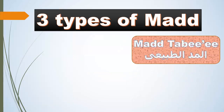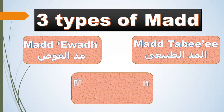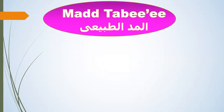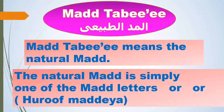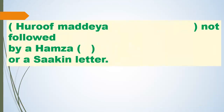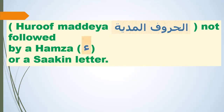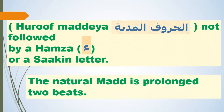Madd Tabi'i — Madd Tabi'i means the natural Madd. The natural Madd is simply one of the Madd letters: Alif, Waw, or Ya. The Madd letters should not be followed by a Hamzah or a sukoon on a second letter. The natural Madd is prolonged two beats.